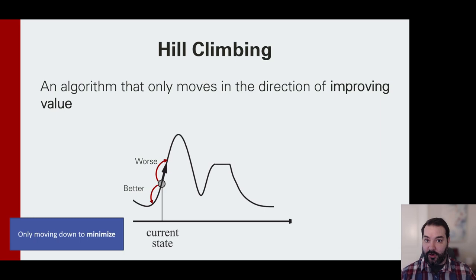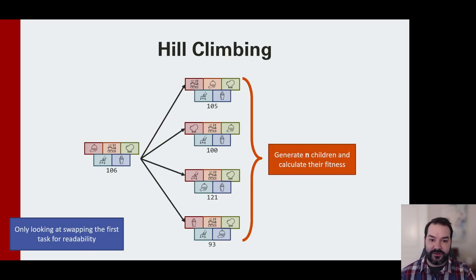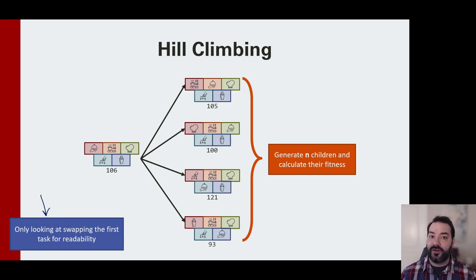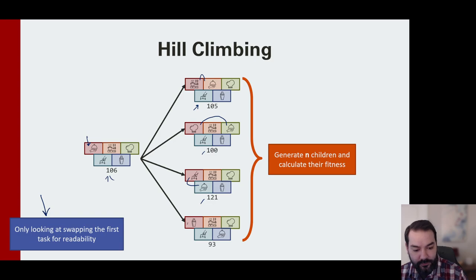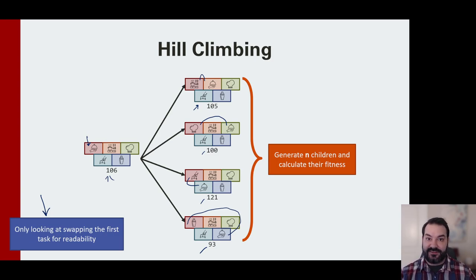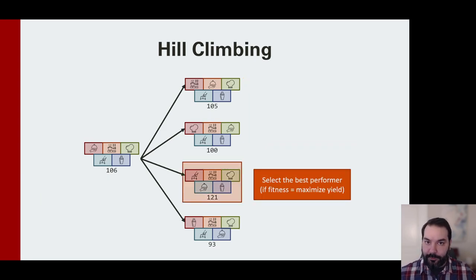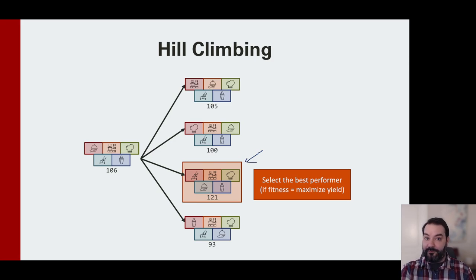What I would do is generate my moves. Since there are so many possible configurations, I'll focus only on swapping red. Red is the only person I'm looking at in this first iteration. I have my 106. If I swap red and orange, I get 105. If I swap red and green, I get 100. If I swap red and blue, I get 121. Red with purple gives 93. I've generated the children and built their fitness. If I'm maximizing, I pick the child with the best value — 121 — and that's the new configuration I go to.